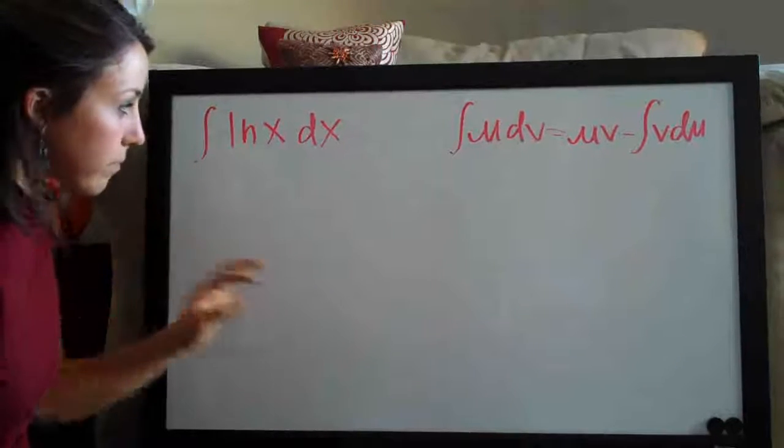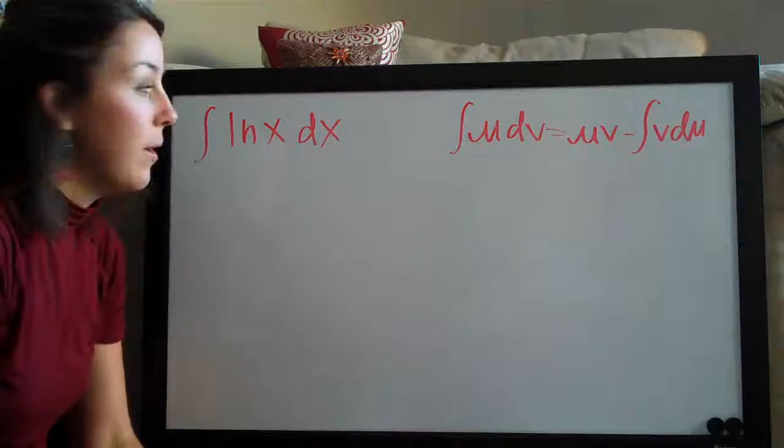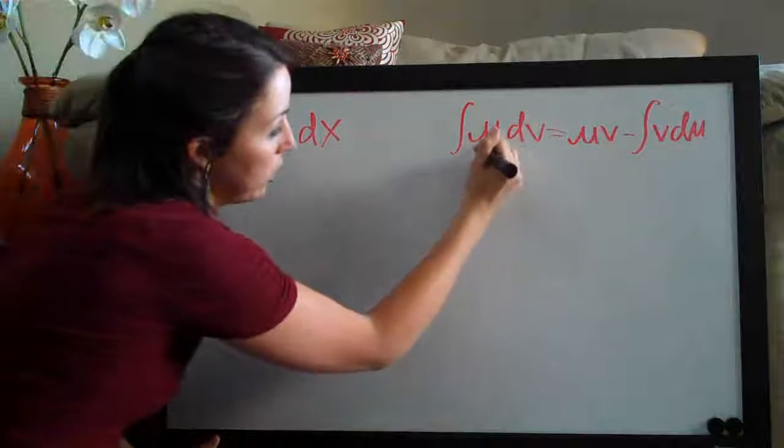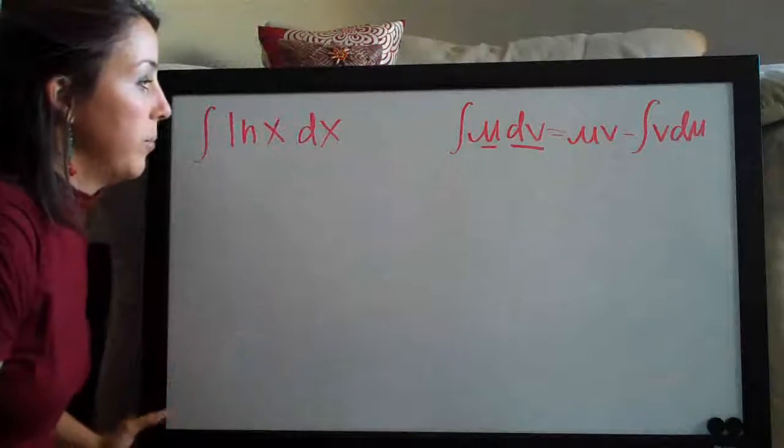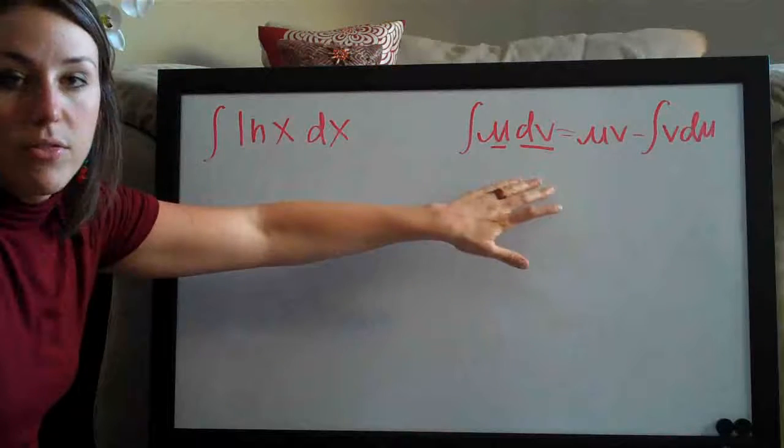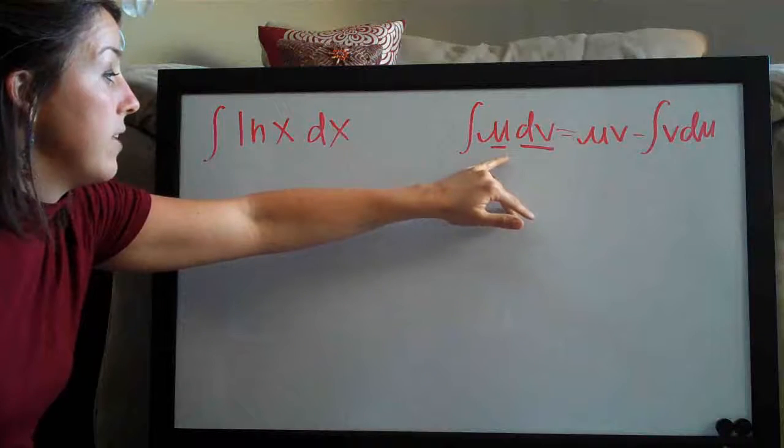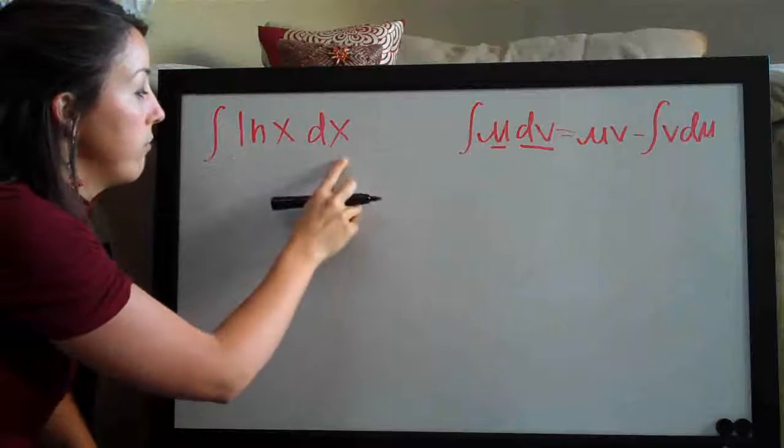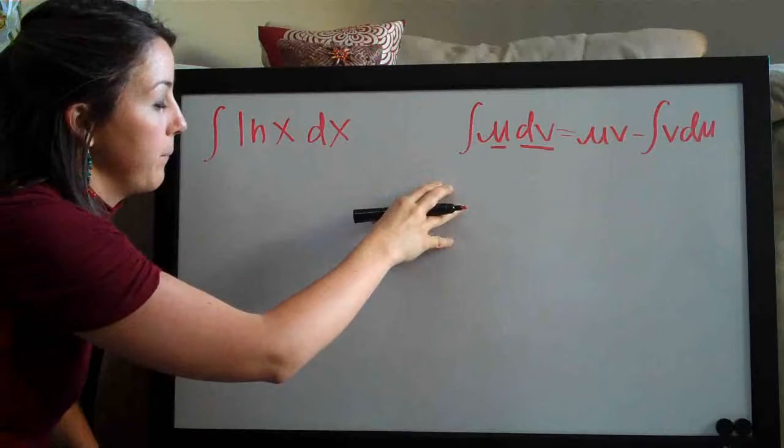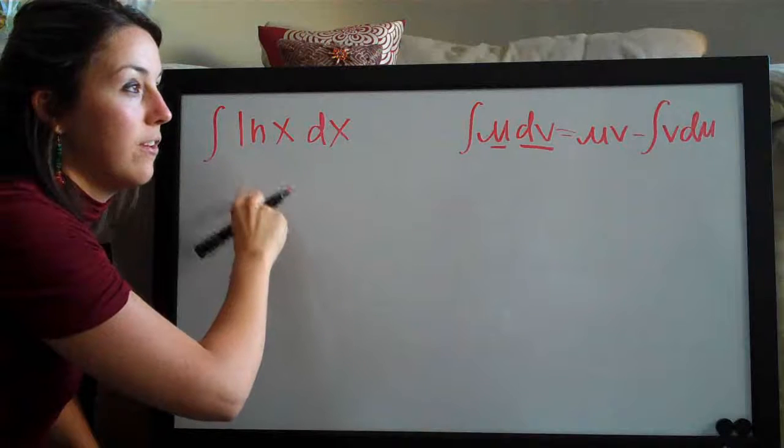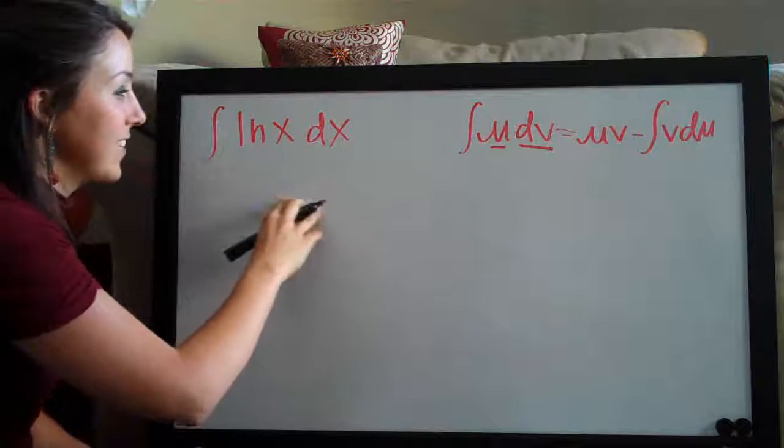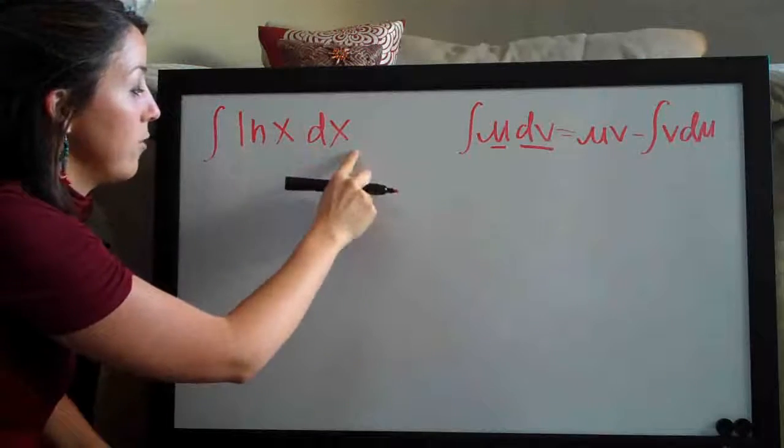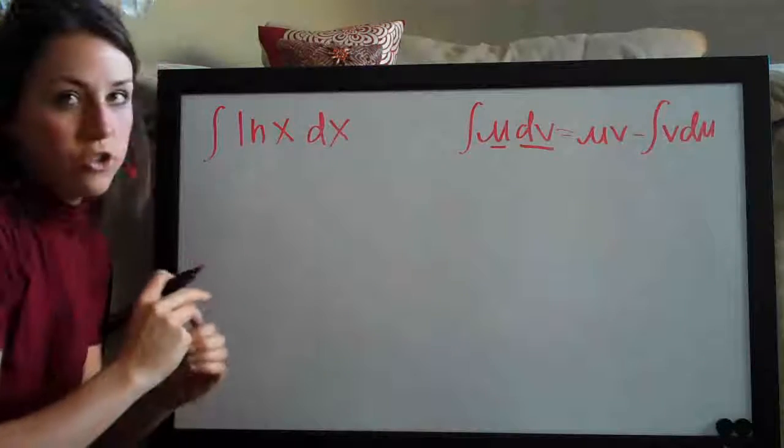The first thing that we do, because we can't just integrate this on its own, we have to use this formula, we need to apply u and dv to values in our problem. And you can find out more about this in the integration by parts section of the integral calc website. But basically, we want to assign u to whatever part of our function will differentiate well. So we're going to be taking the derivative of u to get du. When we take the derivative of one of these pieces, we want it to simplify itself.